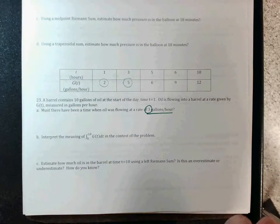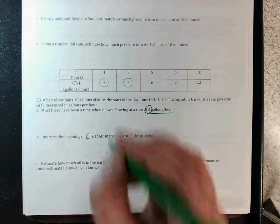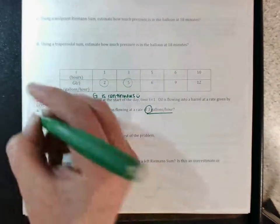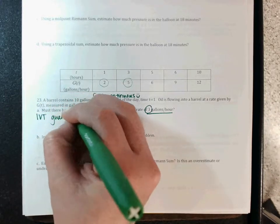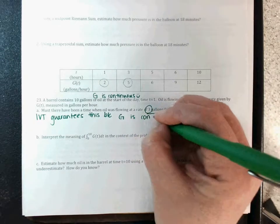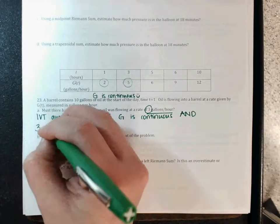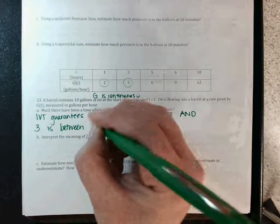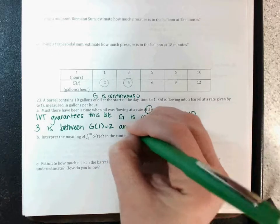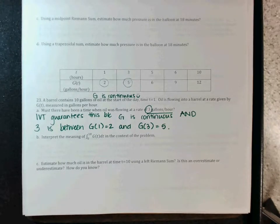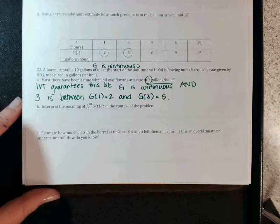On the AP test they would need to state that the function is continuous. Assuming g is continuous, the IVT guarantees this because g is continuous and the value 3 is between g(1) = 2 and g(3) = 5. There are many ways to word that — hopefully in your test corrections you've confirmed whether you did it correctly.